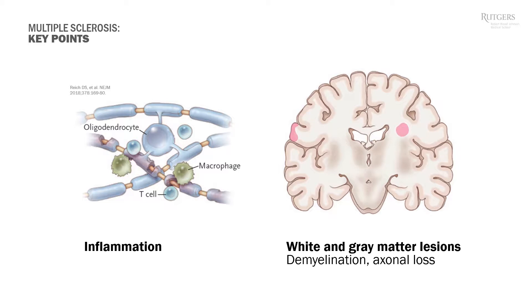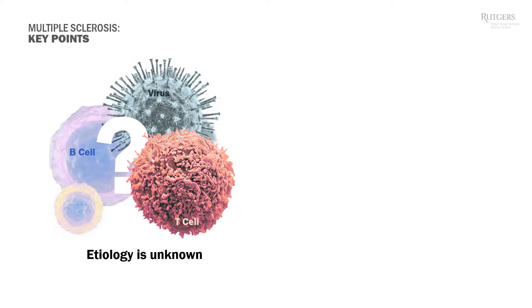The disease affects both white and gray matter — so it's not only a white matter disease. There are multiple theories, but as of now we don't know the cause. The autoimmune theory is the leading one, followed by the viral hypothesis. Both hypotheses were created to explain why MS hits only the central nervous system, not the peripheral nervous system. But five to ten years from now, maybe we will have another hypothesis.